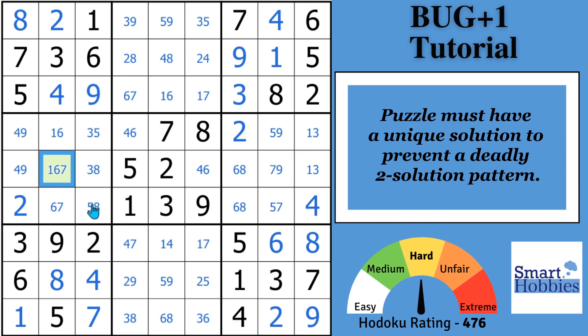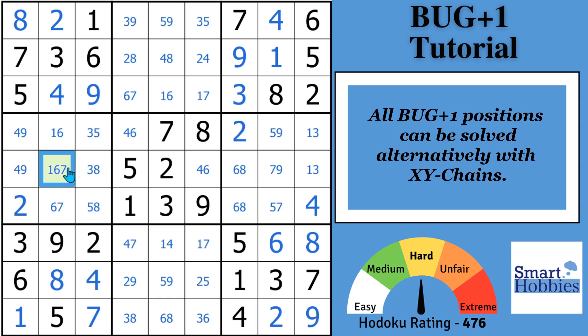And then the second point I want to make is that in theory, you can solve all bug plus one positions using an XY chain. And so an XY chain is a sequence of a chain of cells that all have bi-value cells that you can make eliminations with. But this is a little bit harder to spot and execute in a bug plus one.